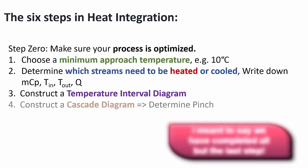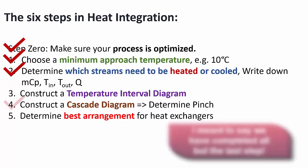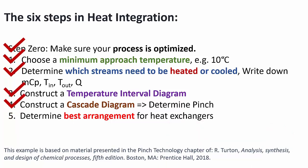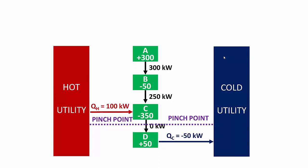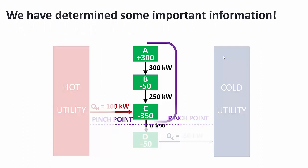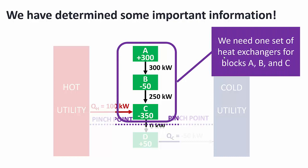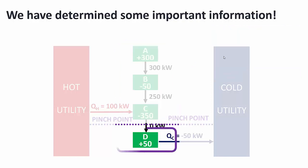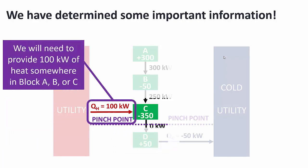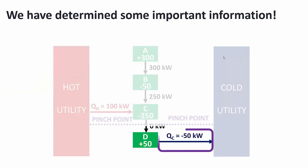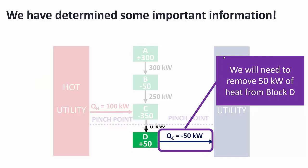We have completed all steps in heat integration and are at our final step: determining the best arrangement of heat exchangers. This is the longest and most difficult step, so please be patient. Remember that the cascade diagram determined where we had pinch points. We determined we had to design one set of heat exchangers for blocks A, B, and C above the pinch point, and another set for block D. We also learned that we need to supplement blocks A, B, and C with 100 kilowatts of heat, and we need to dispose of 50 kilowatts of heat within block D below the pinch.